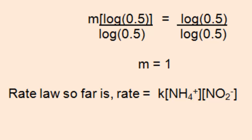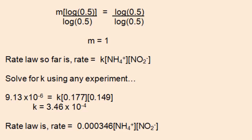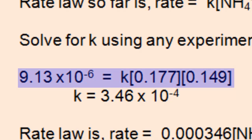Next we have to determine the value of k. K can be solved using any experiment. Substitute the value of the initial rate on the left. Substitute the values of the corresponding concentrations for that initial rate. And you'll have one equation with one unknown. And k can be solved using basic algebra.